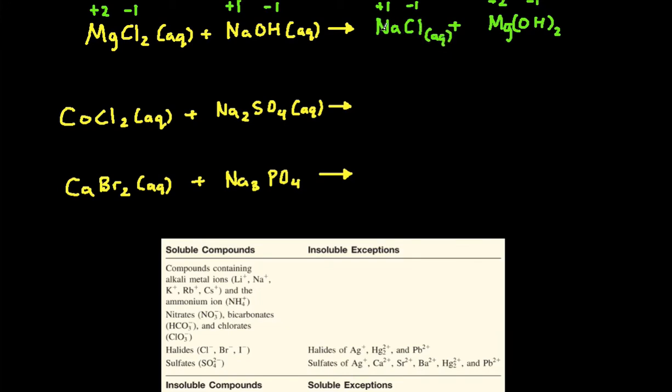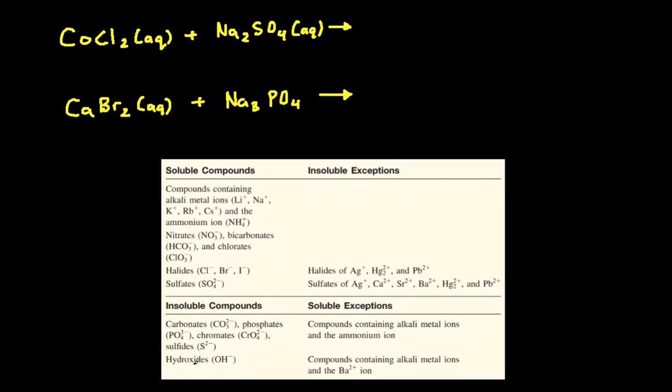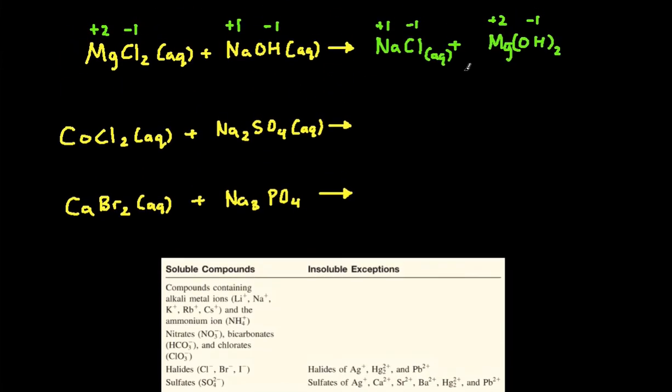Aqueous just means that the ionic compound is soluble in water. Next, if we look at magnesium hydroxide, let's try to find either magnesium or hydroxide. It says that right here, hydroxides generally are insoluble, except when it's with an alkali metal or barium. Magnesium is not alkali metal or barium, so that means it's going to be insoluble, making it a solid.